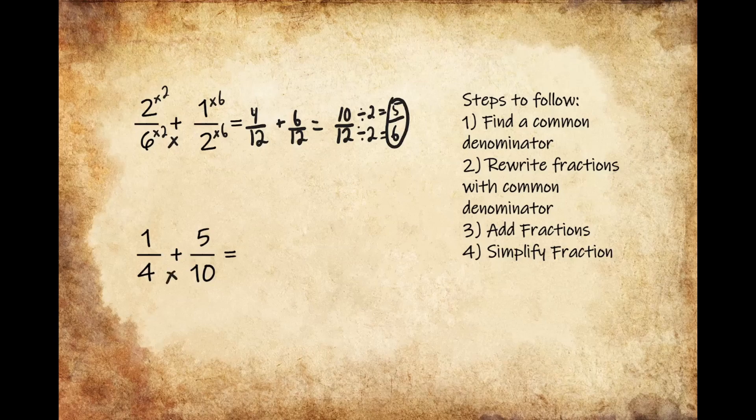To do that, we're going to multiply the value of the denominators. 4 times 10 gives us 40, so let's go ahead and write our new denominator of 40.